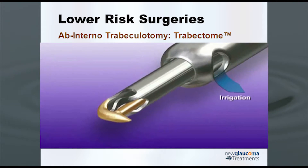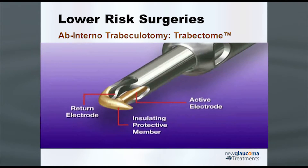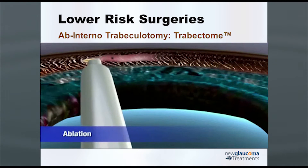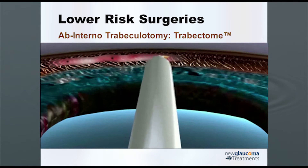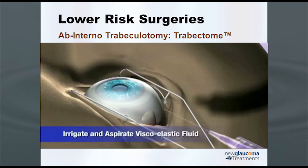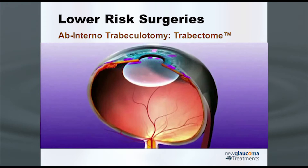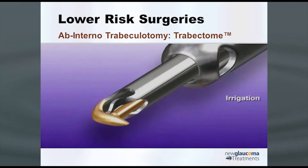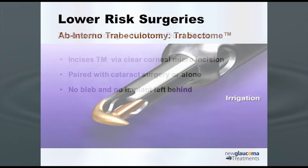This is the instrument here, and it's a pretty cool looking instrument. It has a foot plate to protect the posterior wall of the canal, and essentially it's got these electrodes that produce a plasma, and then it sucks up the trabecular meshwork tissue as it opens up the canal. It's about a $50,000 instrument, and then they make you purchase each of the hand pieces.